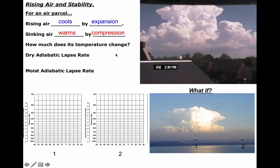If you allow air to rise, it cools by expansion. When air sinks, it warms by compression — we discussed this with hurricanes, where air descends in the eye and compressionally warms. There's a law called the first law of thermodynamics, and from that law we're actually able to prescribe exactly the rate at which air cools or warms by rising or sinking.